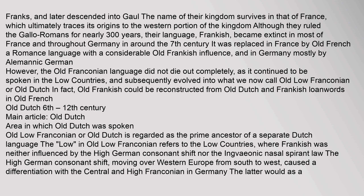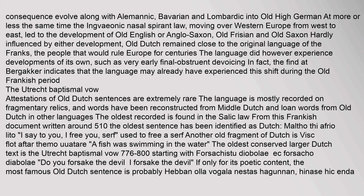Old Low Franconian, or Old Dutch, is regarded as the prime ancestor of a separate Dutch language. The 'Low' in Old Low Franconian refers to the Low Countries, where Frankish was neither influenced by the High German Consonant Shift nor the Ingvaeonic Nasal Spirant Law. The High German Consonant Shift, moving from south to west, caused differentiation with Central and High Franconian in Germany, which evolved into Old High German. The Ingvaeonic Nasal Spirant Law, moving from west to east, led to the development of Old English, Old Frisian, and Old Saxon. Old Dutch remained close to the original language of the Franks, though it experienced developments of its own, such as very early final obstruent devoicing.